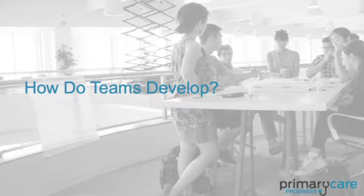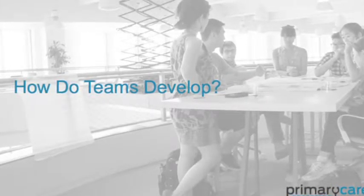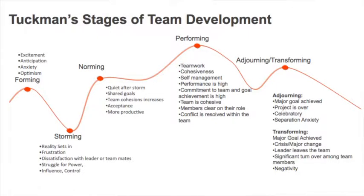Just like humans go through developmental phases, so do teams. I'm going to focus on co-located teams today. The stages are forming, storming, norming, performing, and either the team disbands or transforming. Often at the end of the year, team leadership turns over, so you transform into a new team.